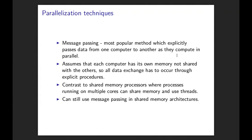In the message passing method, you have a parallel computer consisting of multiple serial computers. These computers do not share memory — they have distinct memory spaces, so they have to communicate via a network. Every time data has to be exchanged between these computers, you pass a message. This is in contrast to shared memory processors, where multiple cores can just access the same region of memory, so you don't have to explicitly move data. But message passing can still be used on a shared memory computer.